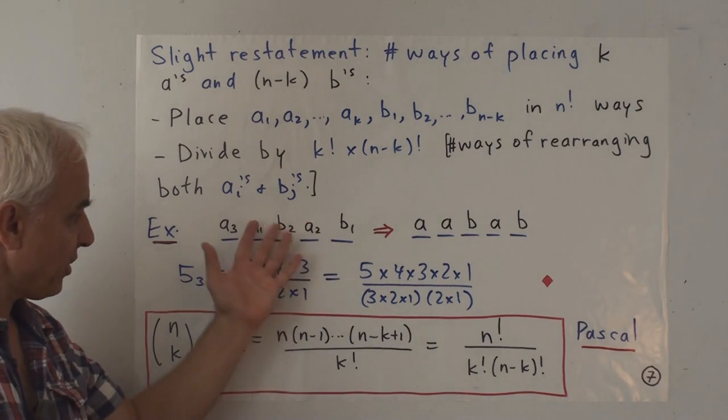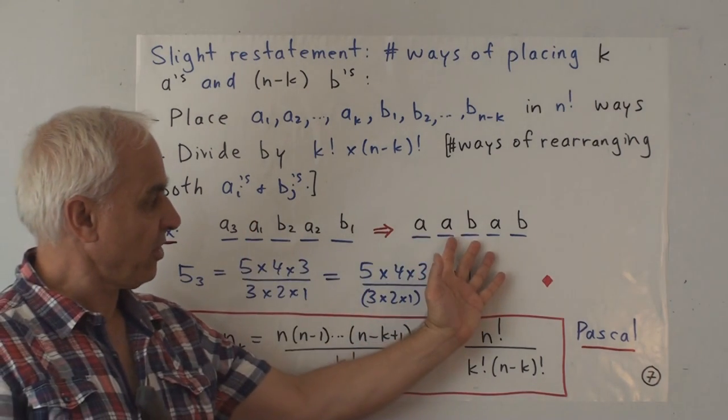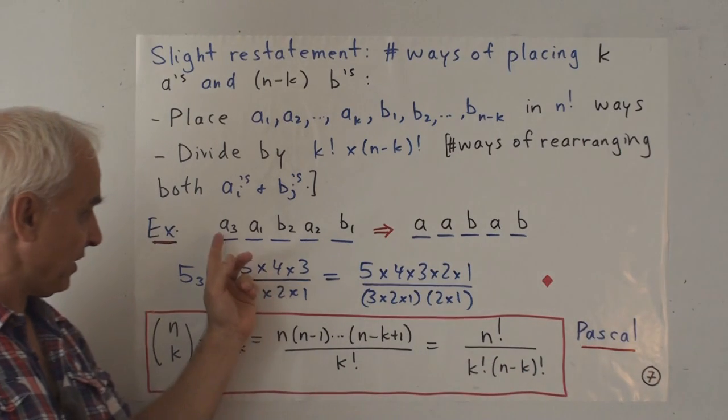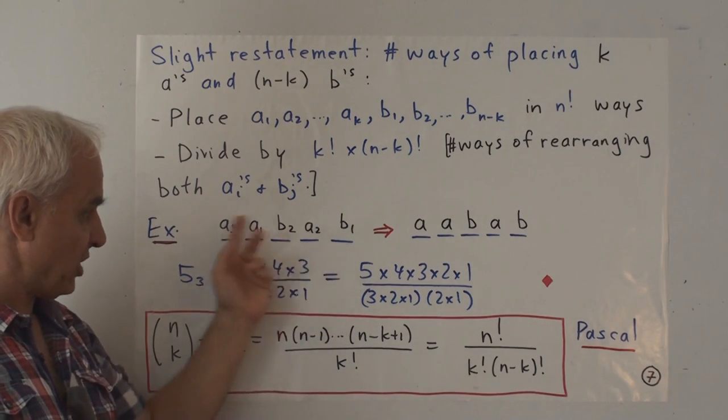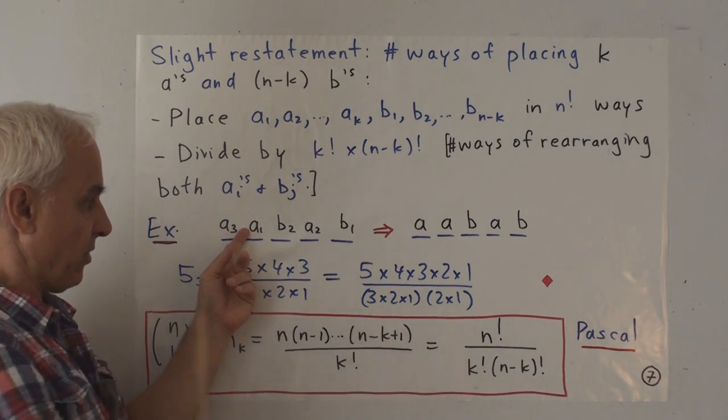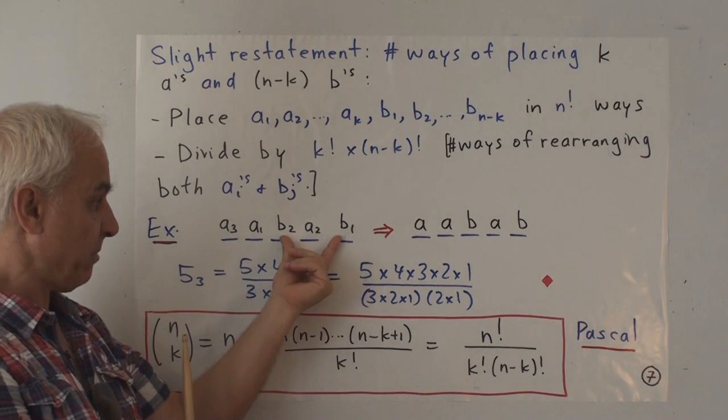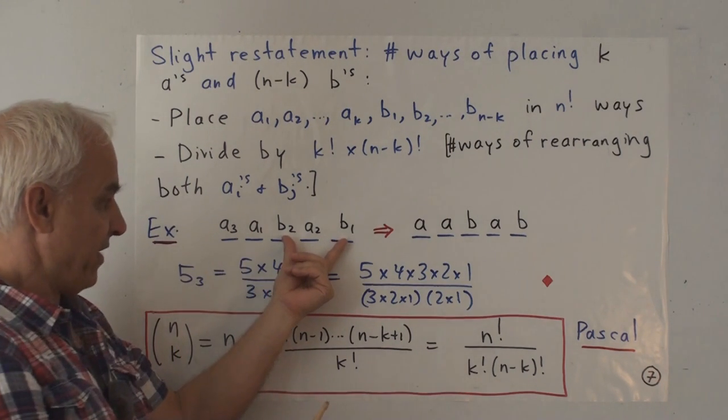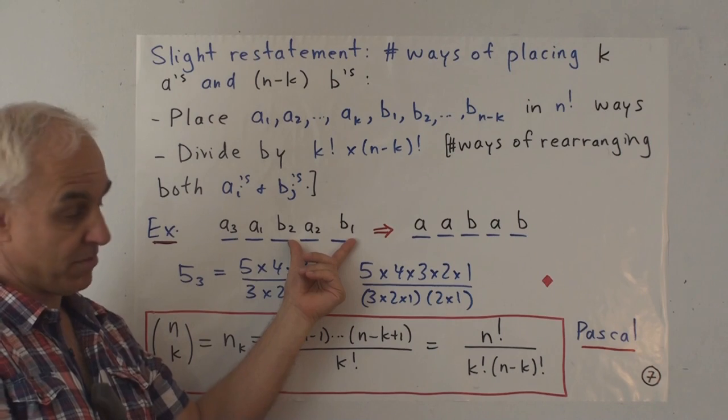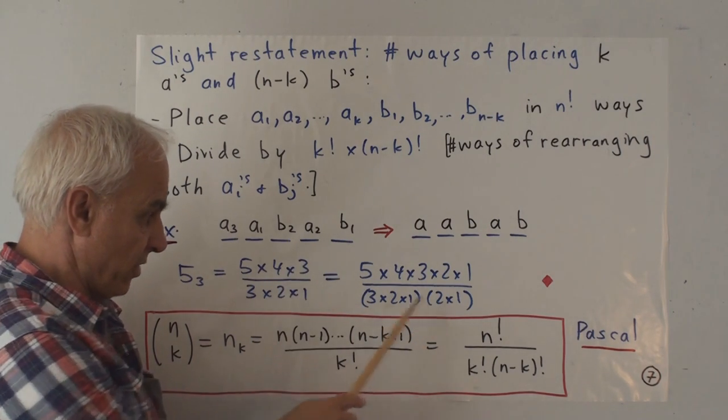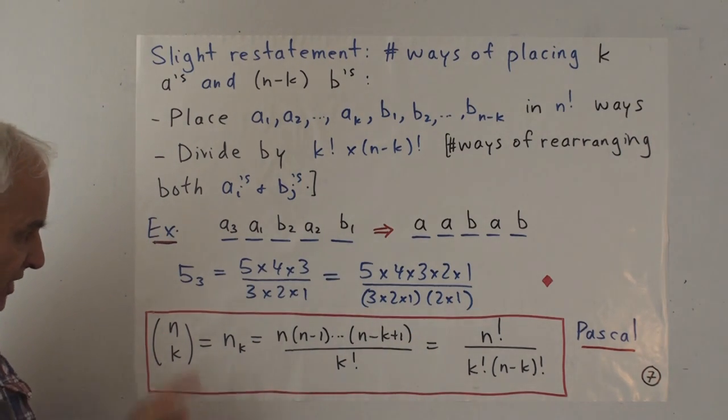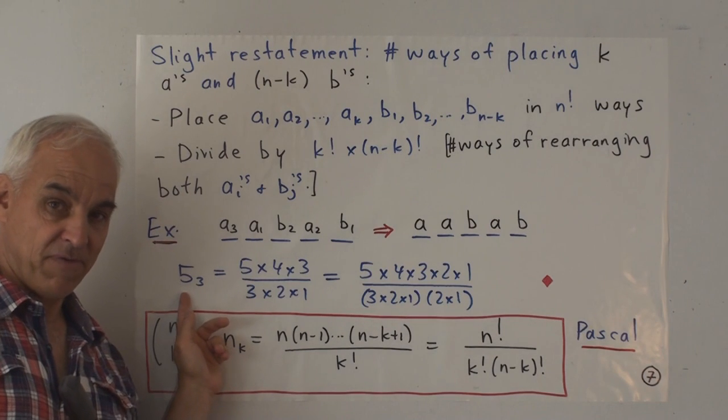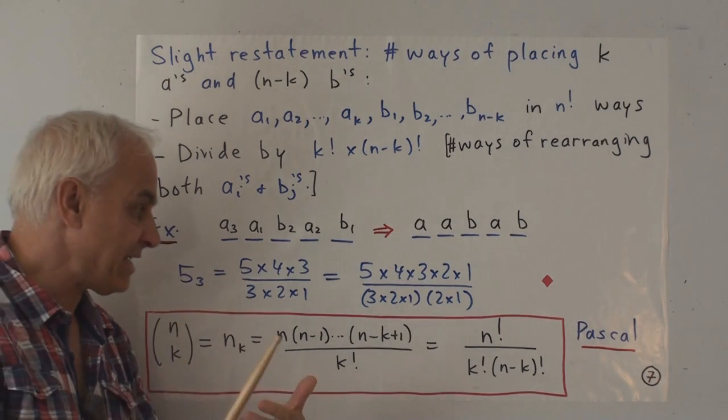And then to go from this to the more symmetrical situation where we've rubbed off the indices, we have to divide by the number of ways of rearranging the three a's, which is the 3 factorial here. And we have to also multiply on the bottom by the number of ways of arranging the 2 b's, in this case, which is 2 factorial.